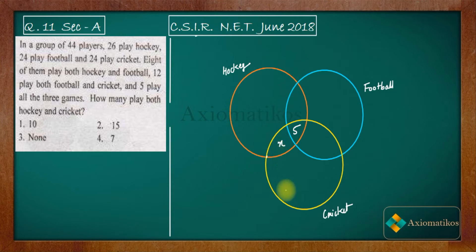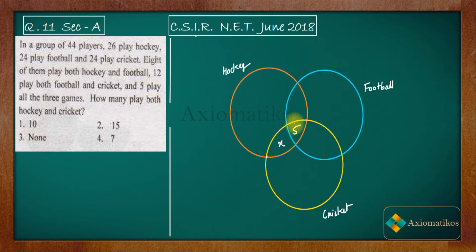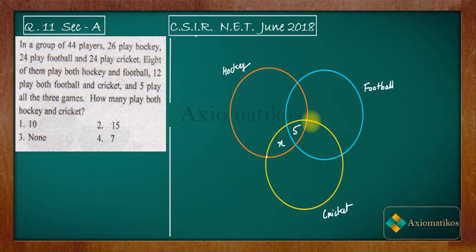We know that 12 players play both football and cricket. In the intersection of football and cricket we have 12 players, but we have already included 5 in the center. So in the remaining area — the football and cricket only region — we have 7 players, because 12 minus 5 equals 7.